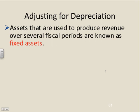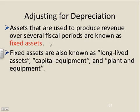What is depreciation? Well, let's talk about assets first. Assets that are used to produce revenue over several fiscal periods or years are known as fixed assets. We talked about this when we did our classified balance sheet. Fixed assets are also known as long-lived assets, capital equipment, and plant and equipment — these are different names for fixed assets, and we'll see that in grade 12.